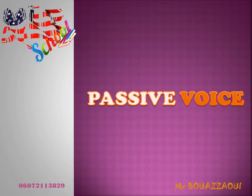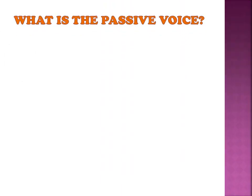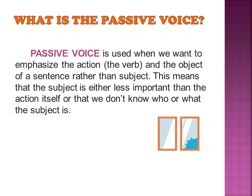This is your English teacher and today's lesson is about the passive voice. Are you still confusing the passive and active voice? Let's start — you will find it easy. The passive voice is used when we want to emphasize the action, the verb and object of the sentence, rather than the subject. This means the subject is either less important than the action itself, or we don't know who or what the subject is.